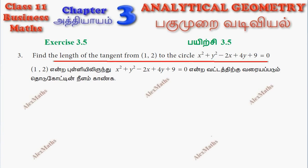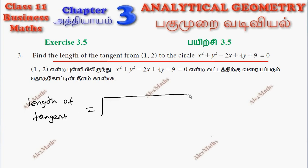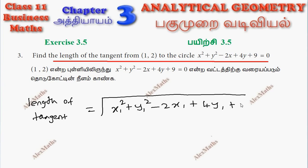So, length of the tangent — in the equation in terms of x1, y1, write and take the square root. So: x1 squared plus y1 squared minus 2x1 plus 4y1 plus 9.